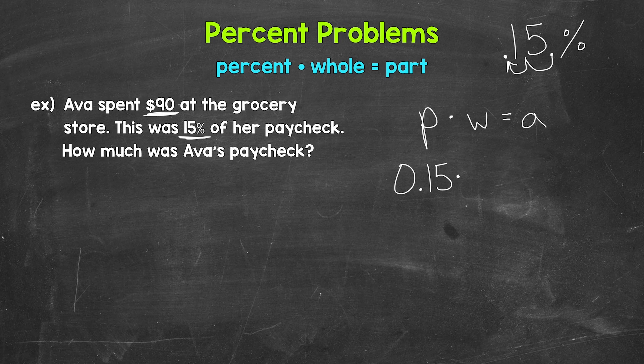Well, Ava spent $90 at the grocery store. This was 15% of her paycheck. $90 is part of Ava's whole paycheck. So that tells us the part is $90.